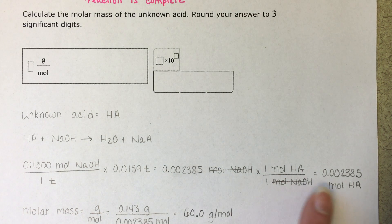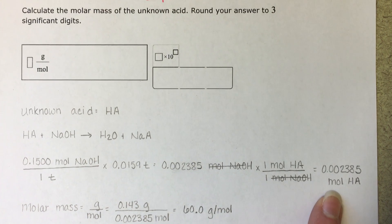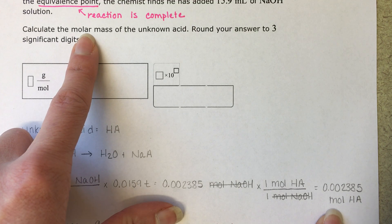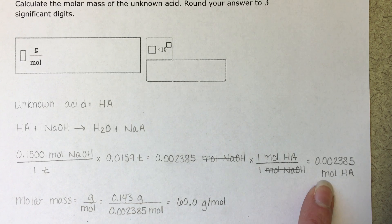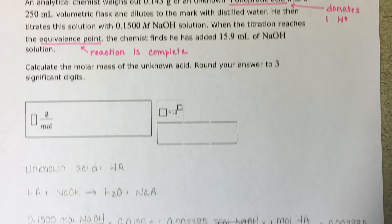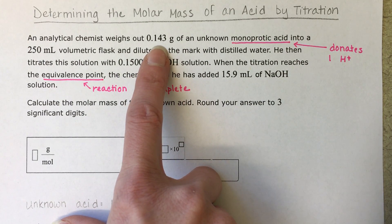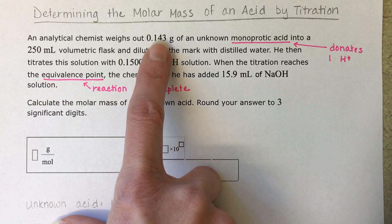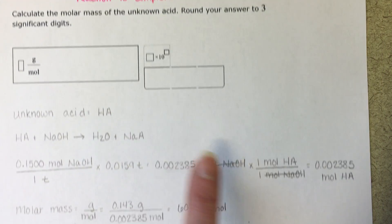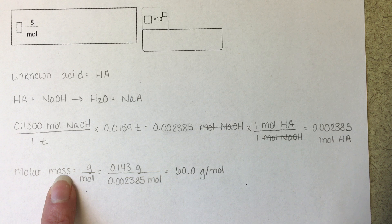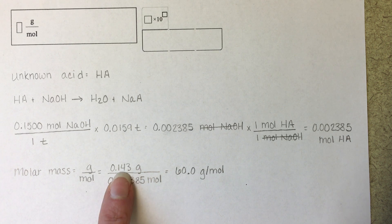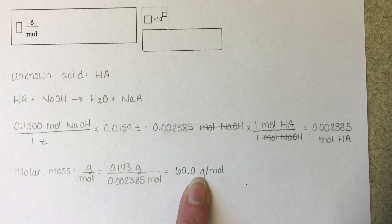We can use stoichiometry to figure out how many moles of unknown acid that represents — it's just a one-to-one ratio. The problem asks us to calculate the molecular weight, or molar mass, which is grams per mole. We've calculated the moles: 0.002385. The problem tells us the mass was 0.143 grams. So we know that 0.143 grams of this unknown acid equates to 0.002385 moles, and we plug those into the molar mass formula — grams divided by moles — to solve for the molar mass. That's all there is to it.